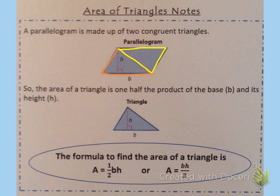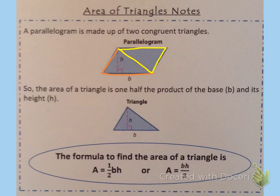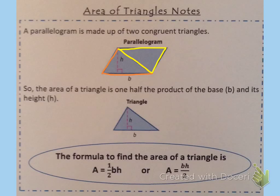Because a parallelogram is made up of two congruent triangles, and the area of a parallelogram is area equals base times height, the area of a triangle is one-half the product of the base and its height — one-half times the base times the height. So the formula is area equals one-half times the base times the height, or area equals base times height divided by two.